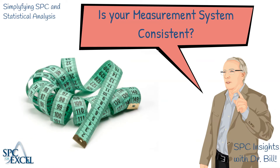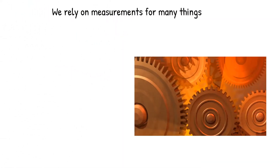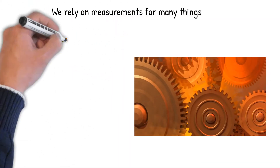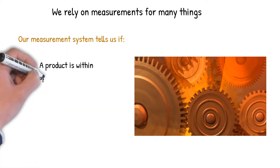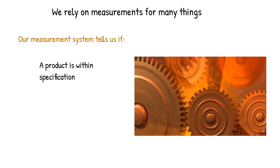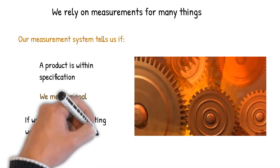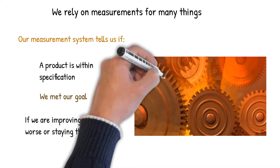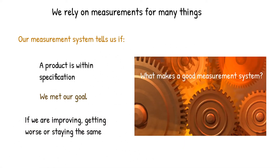We're going to take a look at how you figure out if your measurement system is consistent. We rely on measurements for many things. Our measurement system is going to tell us if our product is within specifications, if we met our goal, or if our process is improving, getting worse, or staying the same.